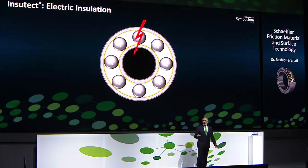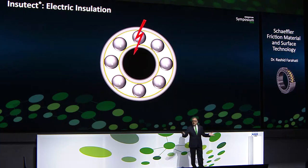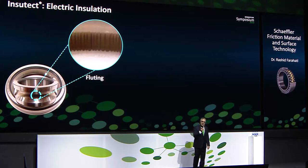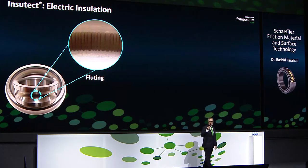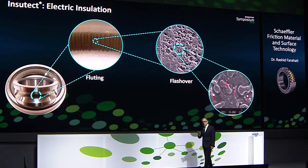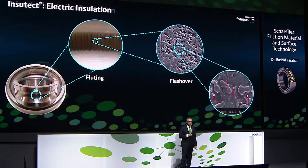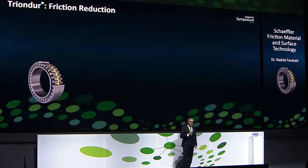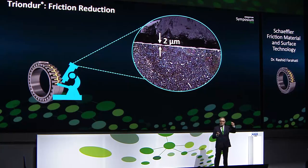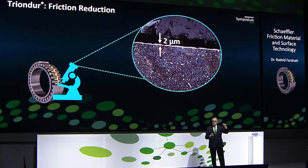In InsoTek, as you know, in e-mobility you need to insulate against electric current. Otherwise the current makes shock and some surface damage — like fluting and damage to the surface as you can see here. Now let me go back to friction again. We have the TriAnder family, which reduces friction coefficient by making a thin layer of diamond-like carbon — DLC — on top of the surface to make friction coefficient low.